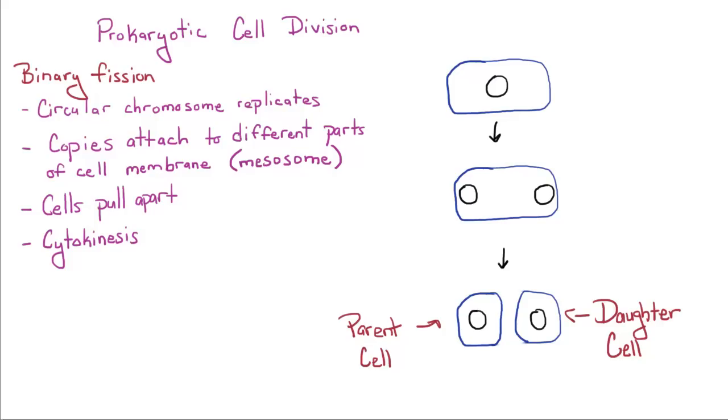The cells are going to pull apart, and then you have cytokinesis, resulting in the parent cell, which is the original cell, and the daughter cell, which is the new cell. Prokaryotic division is very simple compared to eukaryotic cell division.